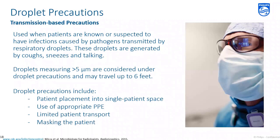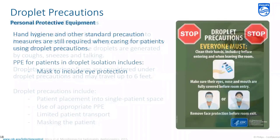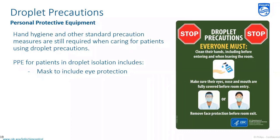The next transmission-based precaution is droplet precaution. This is used when patients are known or suspected to have infections caused by pathogens transmitted by respiratory droplet, typically produced by coughs, sneezes, and even talking. Droplet precaution is implemented only if the droplet is greater than 5 micrometers in size, and it is possible for respiratory droplets to travel up to 6 feet. Droplet precaution includes placing the patient into a single patient space, using appropriate PPE, limiting patient transport, and placing a mask on the patient. Hand hygiene and standard precautions are still required. Additional PPE includes a procedural mask and eye protection.